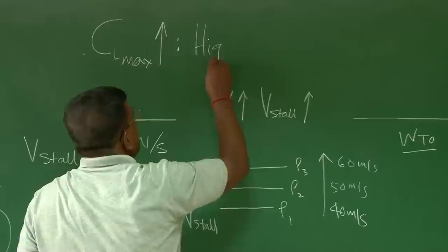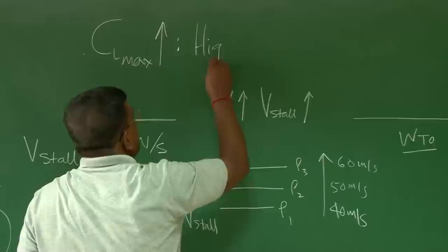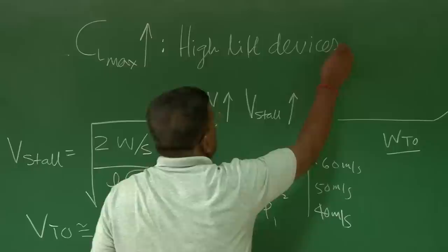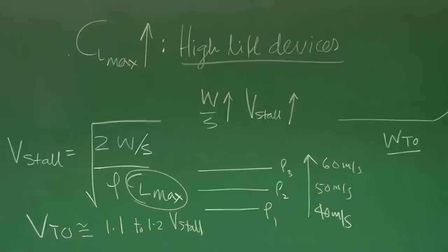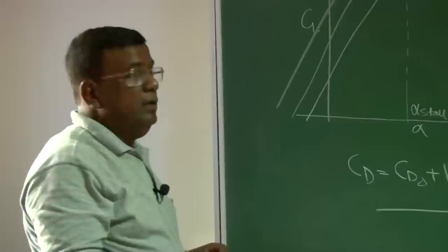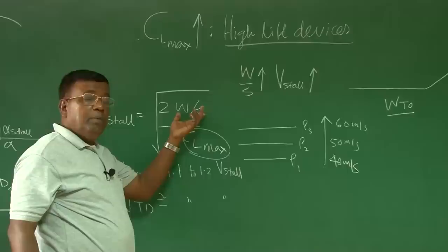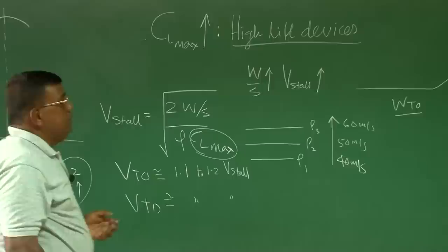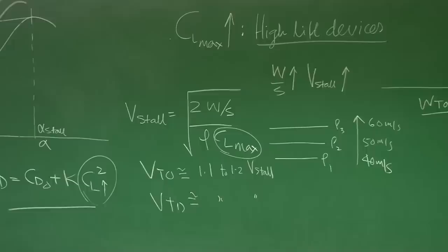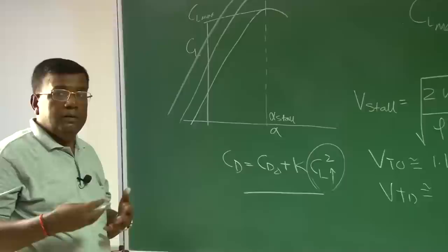The question is: how do we increase CL_max? Graphically, if we can shift the CL-alpha curve upward, although the stall angle may reduce, there is a possibility of increasing CL_max — and that is where we talk about high lift devices. In the design course we will put a lot of focus on high lift devices: how to select them, what advantages they offer, and what penalties come with designing or using them.